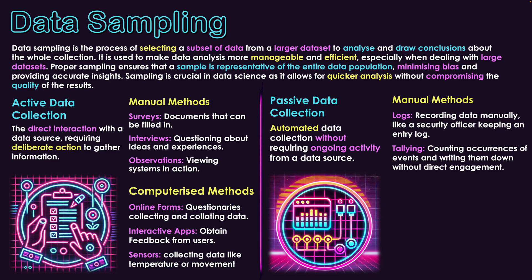The manual passive methods include logs — recording data manually. Like a security officer keeping an entry log, observing cameras and writing down anything suspicious or noteworthy. The people on the other side of the cameras have no idea it's being done, so it's passive. Another one is tallying — you might have learned this in primary school. Like watching cars go past and tallying what colors they were. The people driving had no idea we were tallying them; we were just observing and ticking off the tally. There was no specific activity from the data source supporting our data collection — it was done behind the scenes through observation.